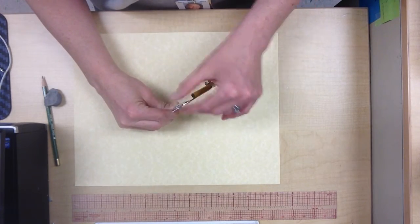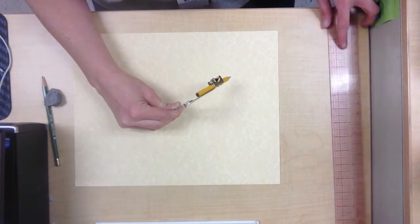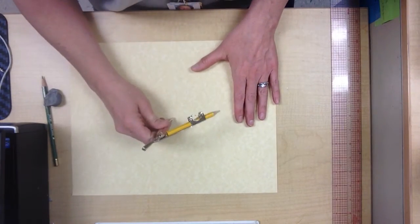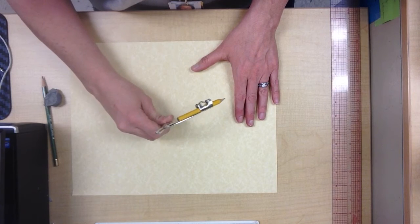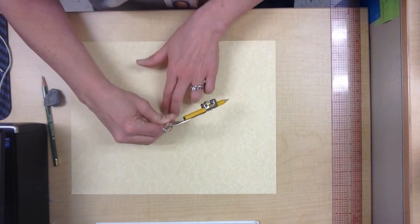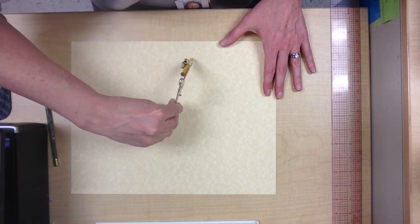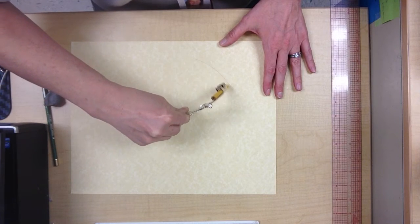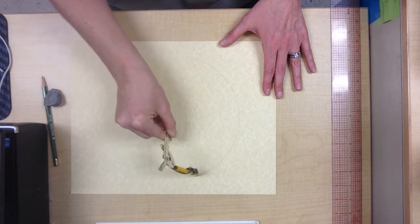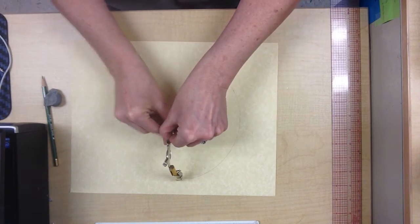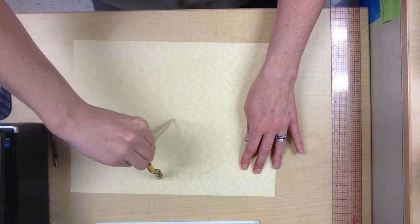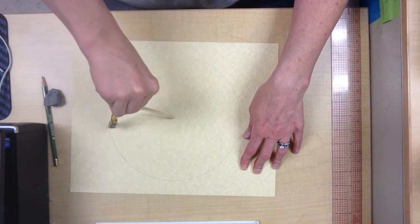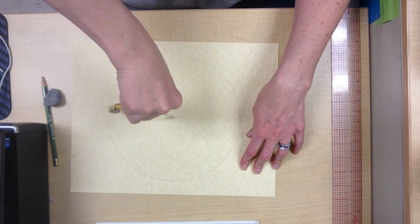What I want to do is create the outside circle by keeping the point of the compass in the center, the intersection of those lines in the center of my paper. Then I'm just going to create my circle, making sure that I maintain my point in the center.